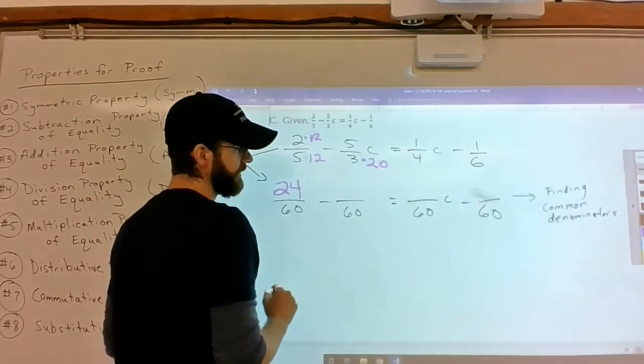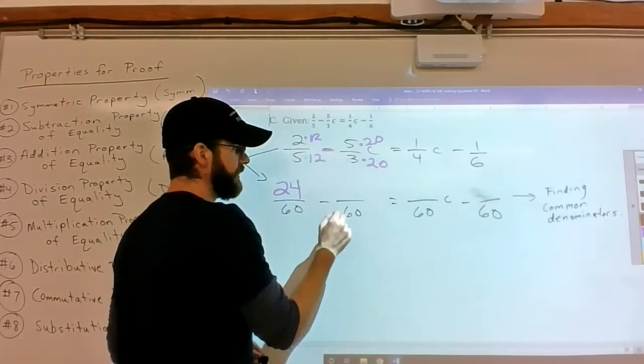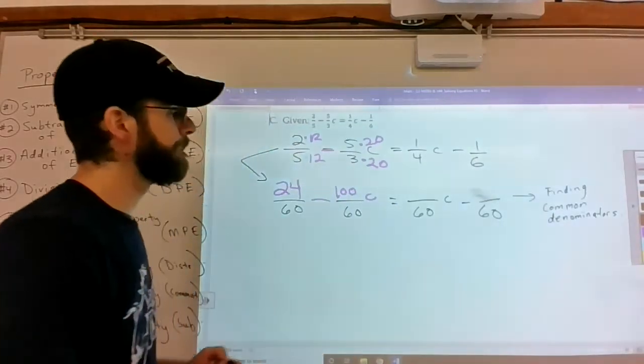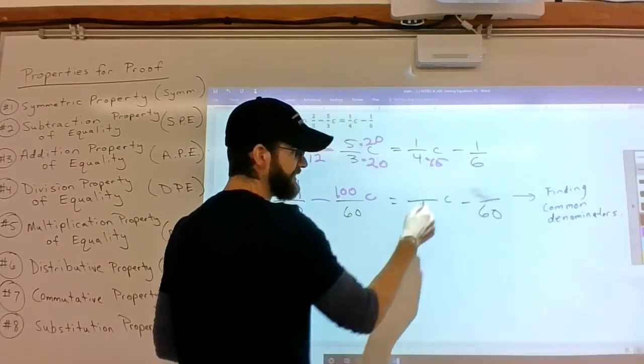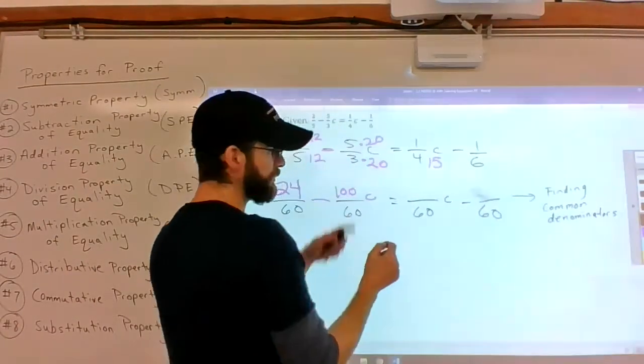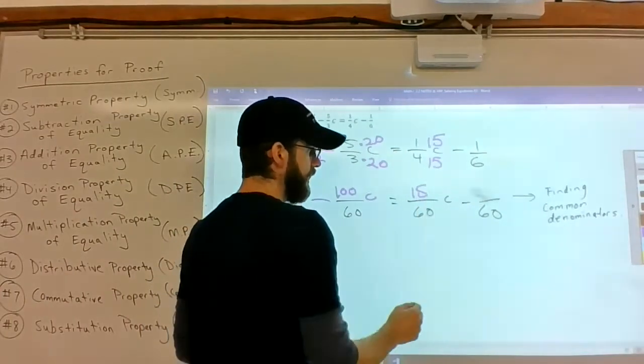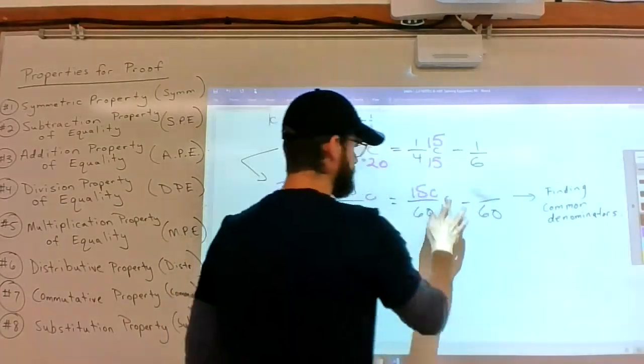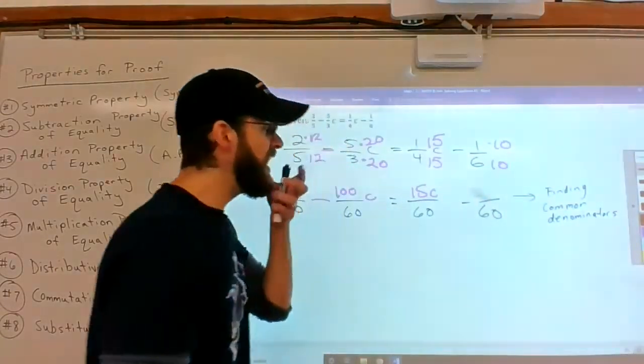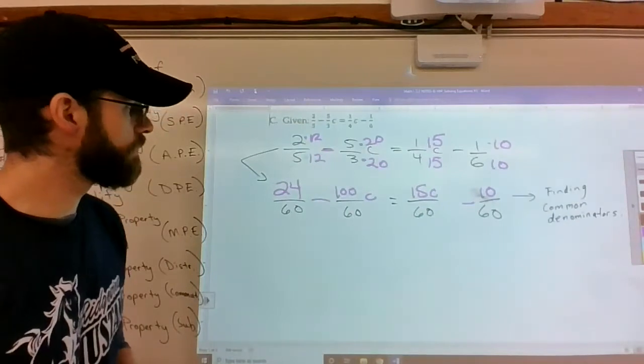Over here, you take 3 times 20 to get 60, which means I've got to take 5 times 20. That's negative 5, so you're going to get a negative 100, and then there's going to be a C attached to it. Over here, times 15 to get 60. So multiply the top times 15. So it's 1 times 15, 15, with a C attached to it. And then times 10 to get 60 over here, so times 10 up here. So it's a negative 10.